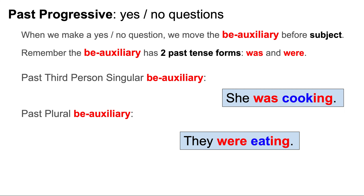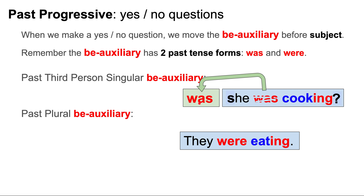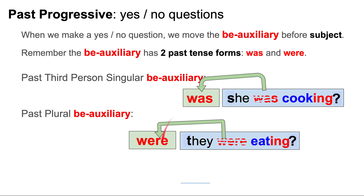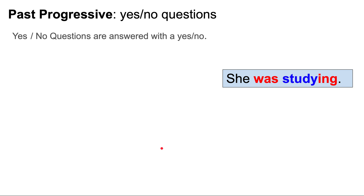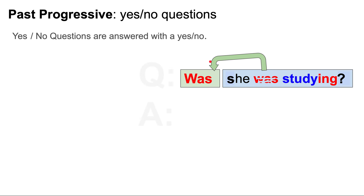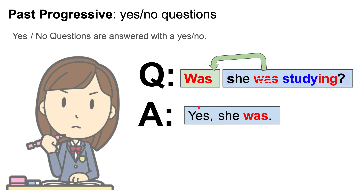Now let's look at yes/no questions. When we make a yes/no question, we move the BE auxiliary before the subject. The BE auxiliary has two past tense forms: was and were. For example: she was cooking — was she cooking? They were eating — were they eating? Yes/no questions are answered with yes or no. Was she studying? Yes, she was.